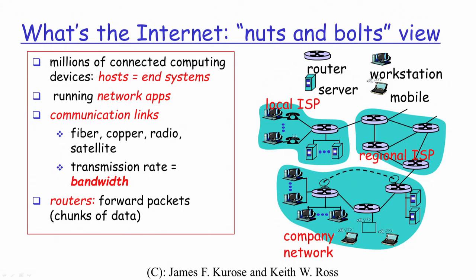If you look at this particular diagram, you see different kinds of icons. The reason for using different icons is to differentiate and easily communicate what the different components are in a typical network topology. A network topology is basically a network diagram used to illustrate the connectivity and systems in the network. This particular icon is used to show a router device, while these other icons represent the host or end systems where we run our network applications.